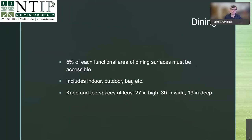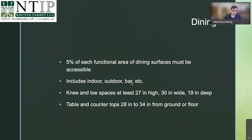Accessible dining specs: knee and toe spaces must be at least 27 inches high, at least 30 inches wide, and at least 19 inches deep — enough clearance to pull a wheelchair in and actually reach the surface. Table and counter tops must be between 28 and 34 inches from the ground. Parking lots and dining areas where a wheelchair user can't reach condiments or self-serve items are among the most common problems cited by ADA consultants.